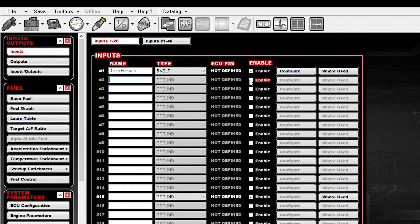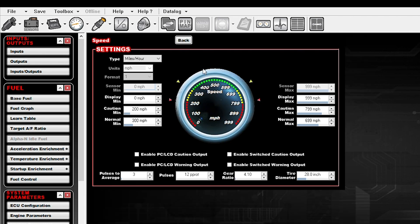We're going to use input number two in this case and we are going to select enable and then we're going to select digital speed slash frequency as the type. We know that we've got to configure it, but we'll go ahead and name it speed and then we'll select configure. Now what that input is going to be is the signal wire from the speed sensor itself. That's what you're going to be using as the input to the ECU.